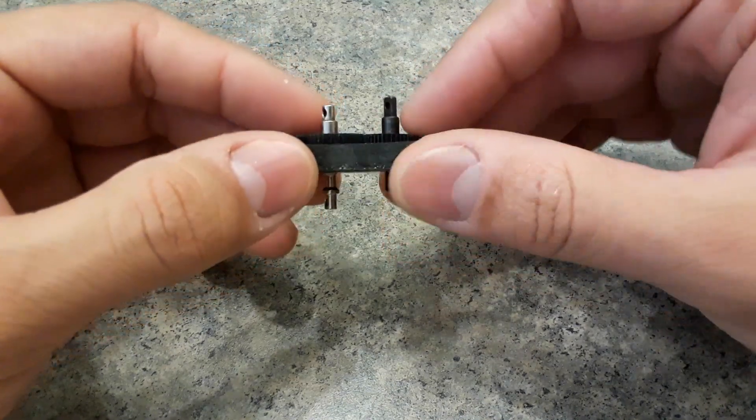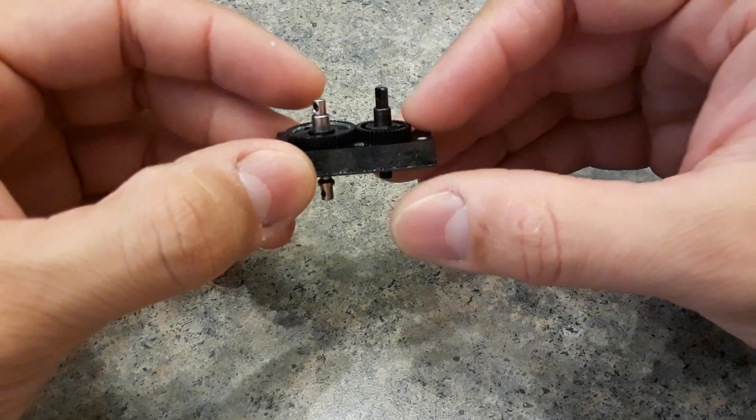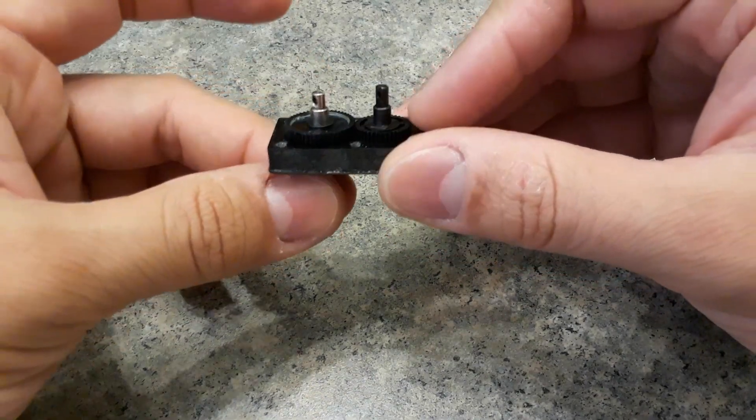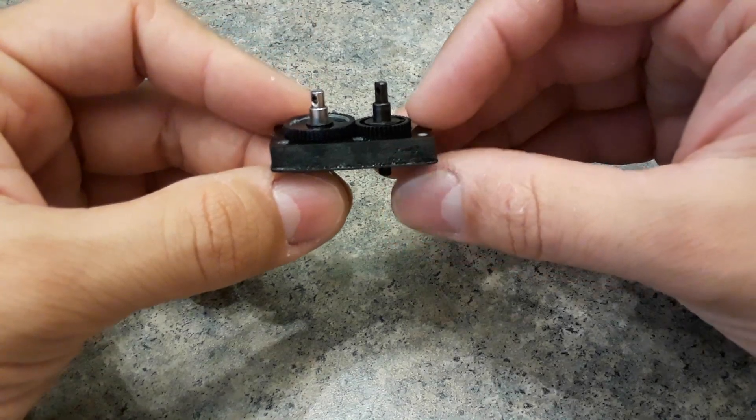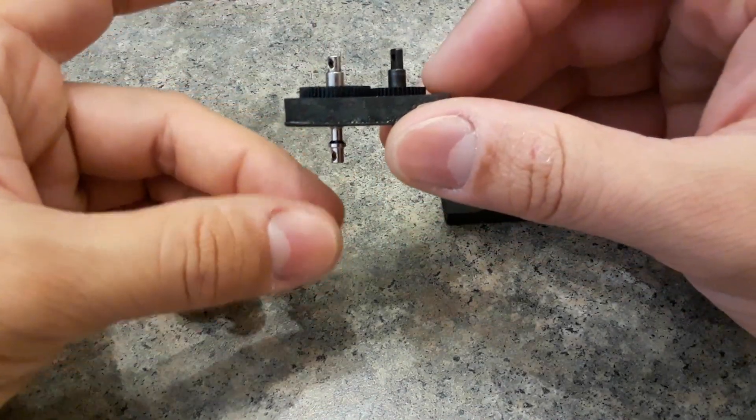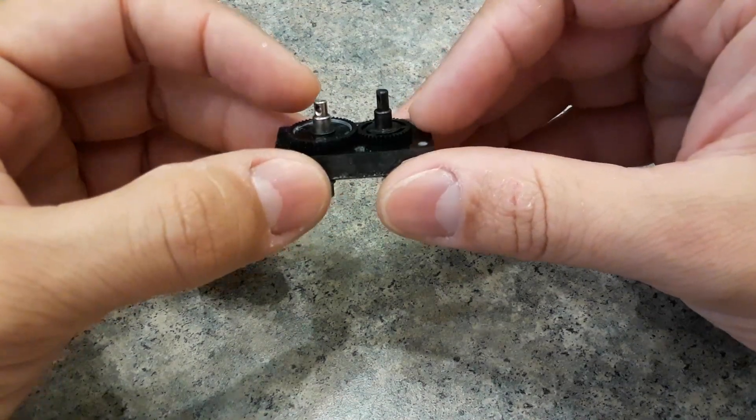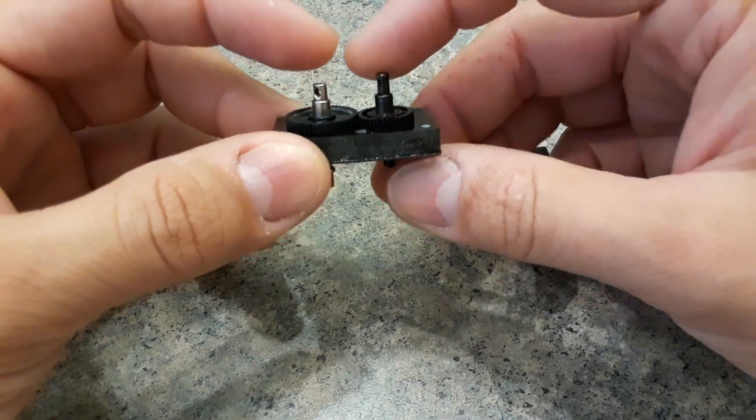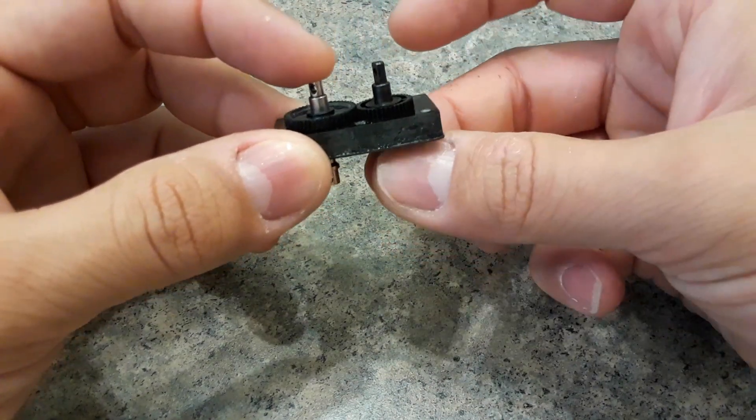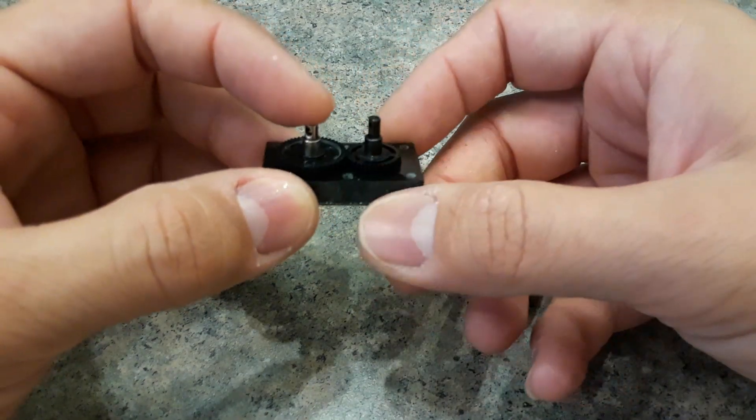If you connect your transmission to here and then connect the rear to here and the front to here, then the front axle will go faster.